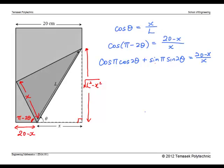Simplifying, we get 0, and cosine pi as negative 1. Therefore, the left hand side simplifies to negative cosine 2 theta equals 20 minus x over x.